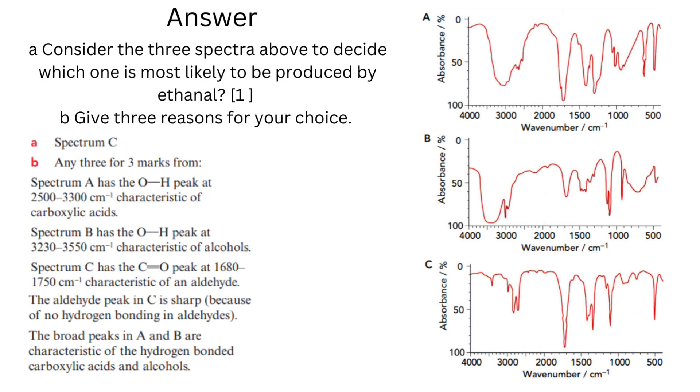The answer for the first question is spectrum C. Reason: Spectrum A has the O-H peak at 2500 to 3300 cm⁻¹, which is characteristic of carboxylic acids. Spectrum B has the O-H peak at 3230 to 3550 cm⁻¹, characteristic of alcohols. Spectrum C has the C=O peak at 1680 to 1750 cm⁻¹, characteristic of an aldehyde.